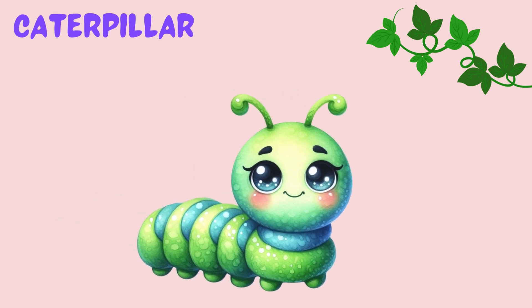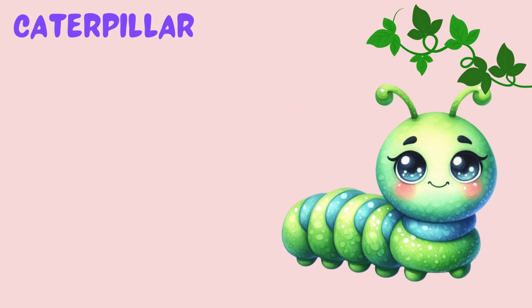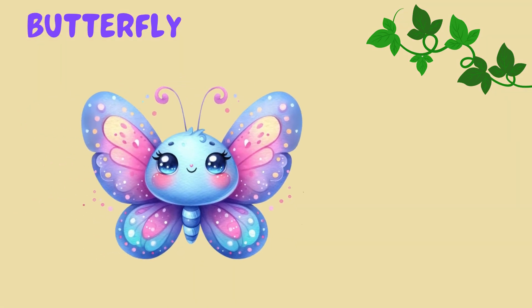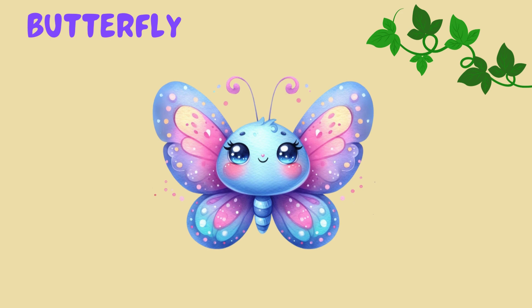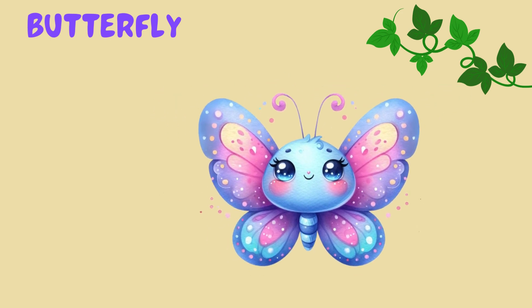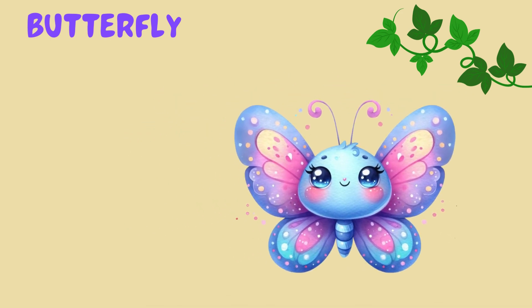Caterpillar. This is a caterpillar. A caterpillar turns into a beautiful butterfly. This is a butterfly. A butterfly has beautiful wings and it flies in the garden.